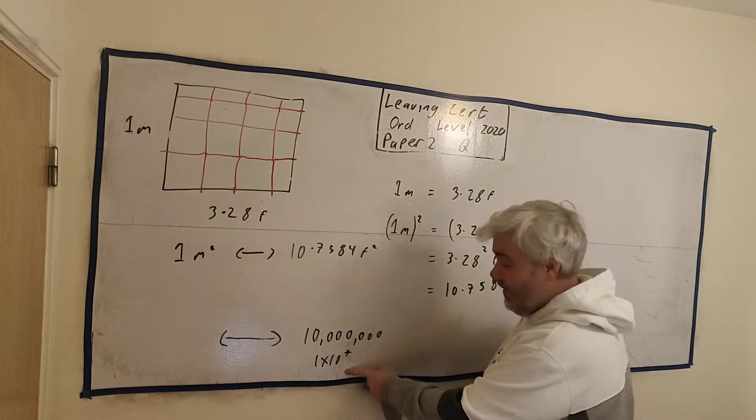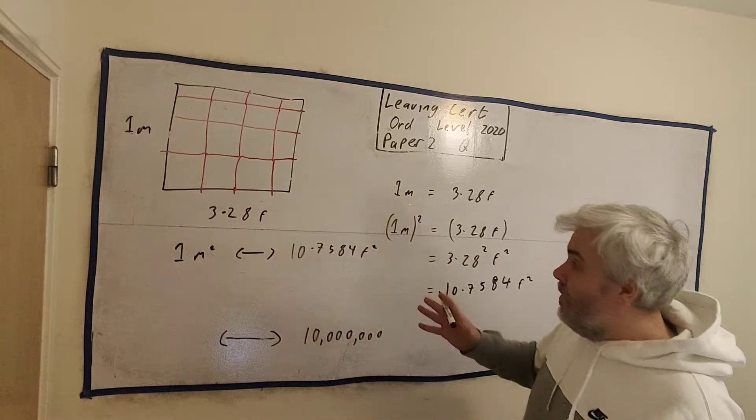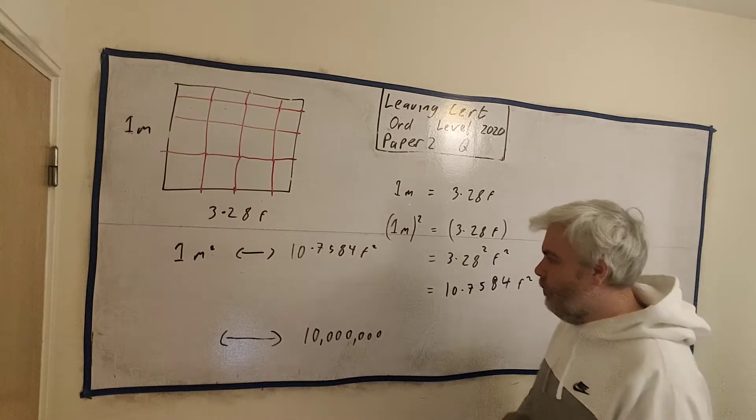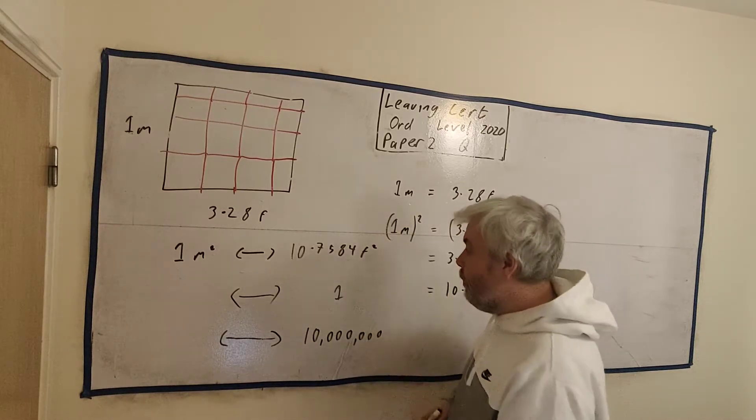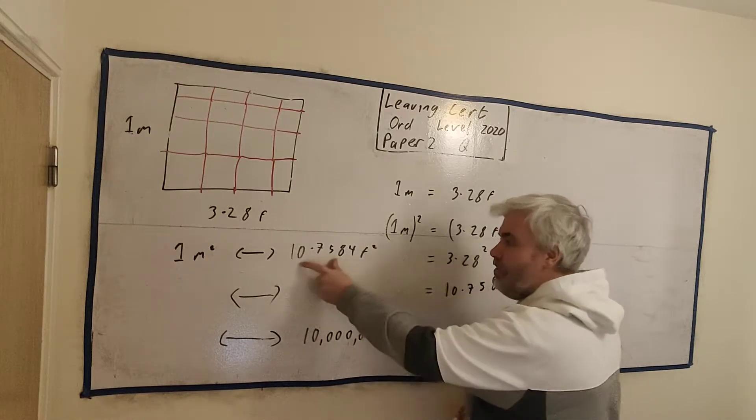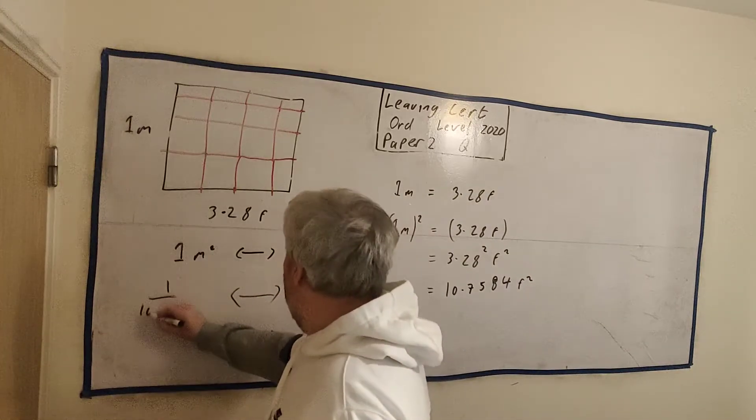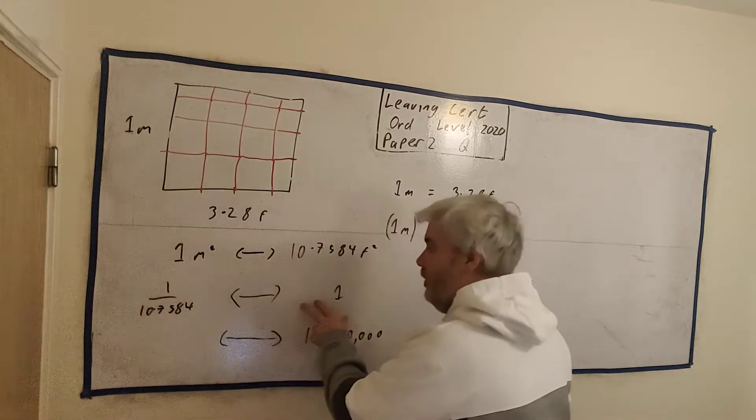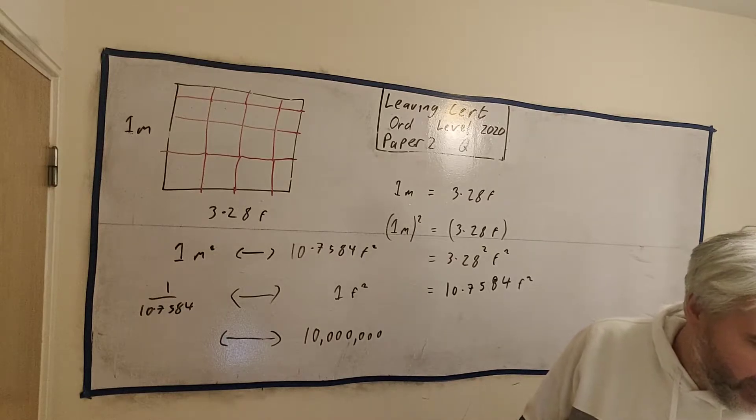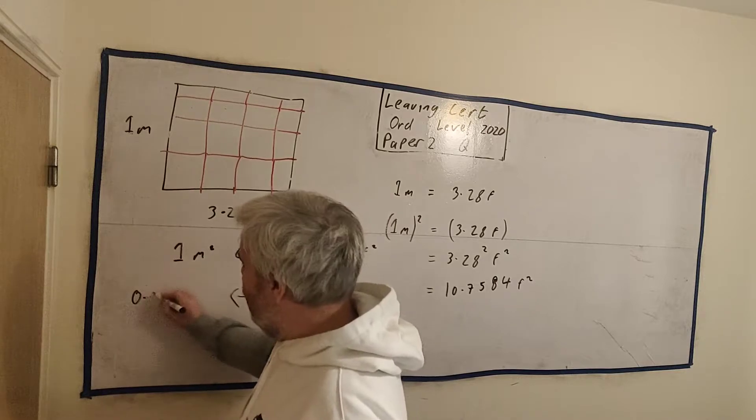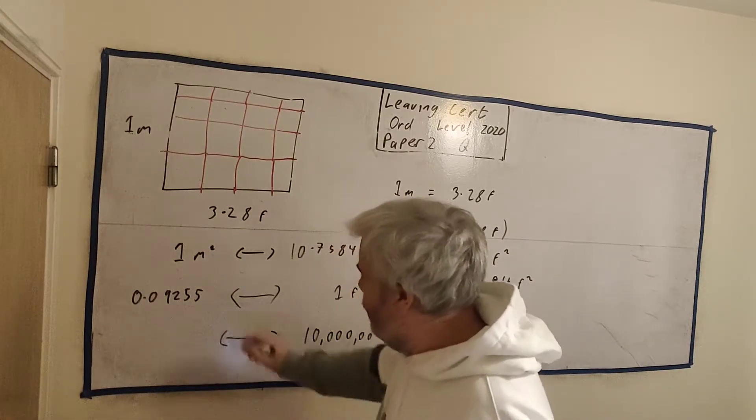So I'd like to find out what 10 million goes towards. Here's how I do it. I change things into 1. If I had a 1 here, it's easy to get from 1 to 10 million. Just multiply it by 10 million. But it's also easy to get from anything to 1. If I just divide this number by itself, I get 1. And on this side, if I divide by 10.7584, this relationship will still equal. 1 foot squared will equal 0.09295 metres squared.